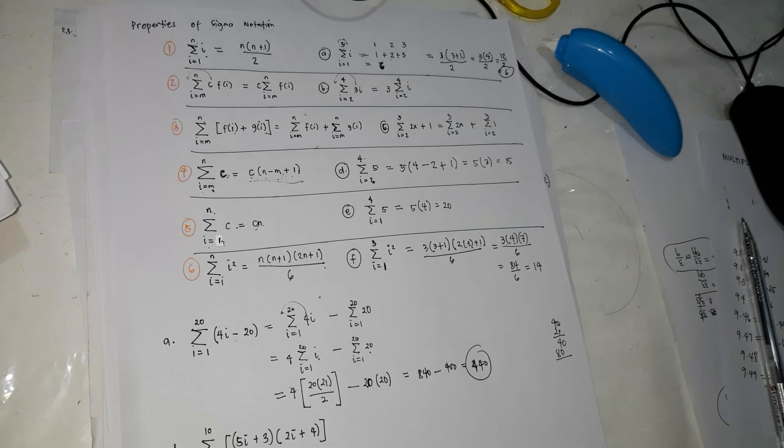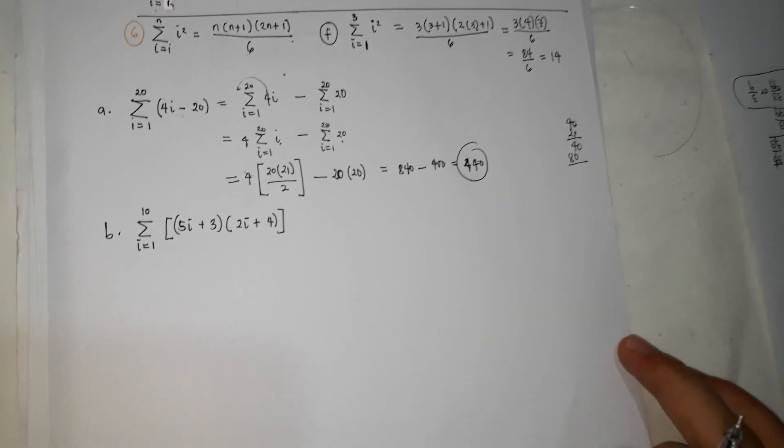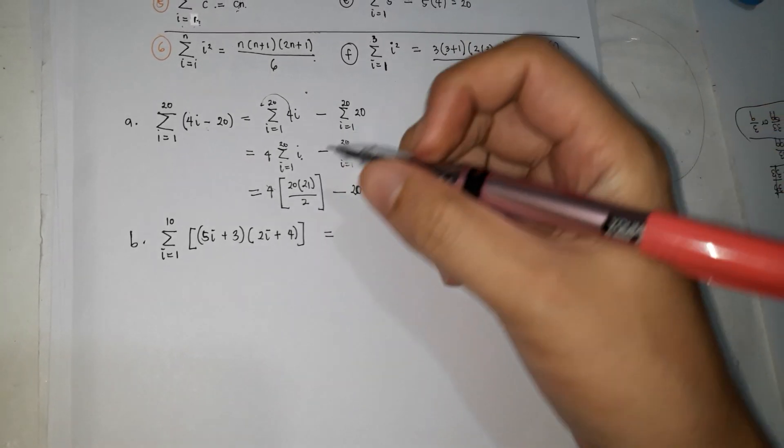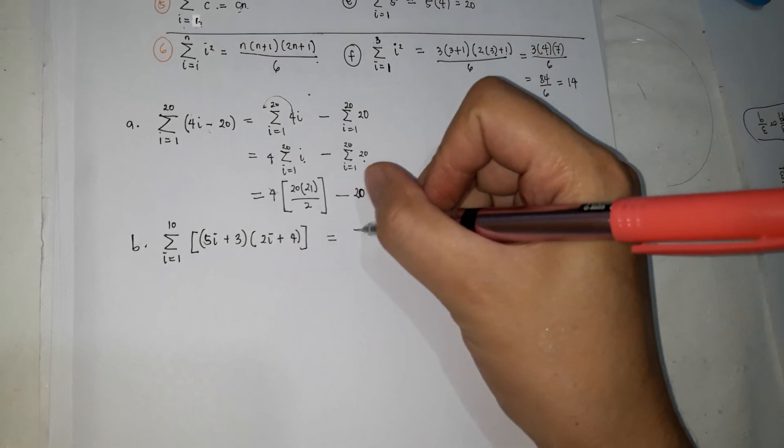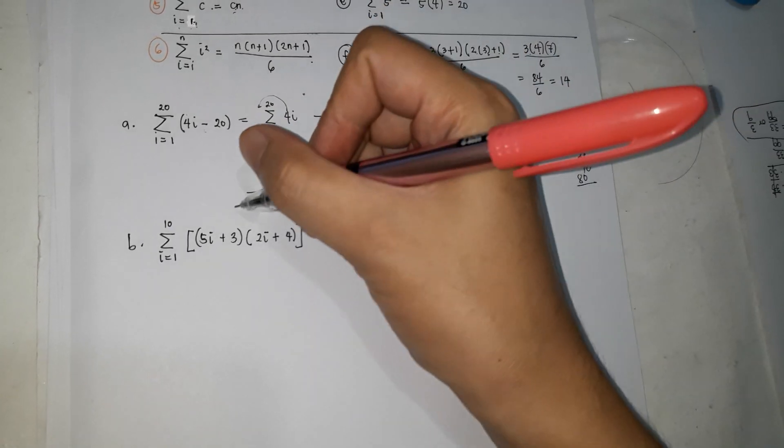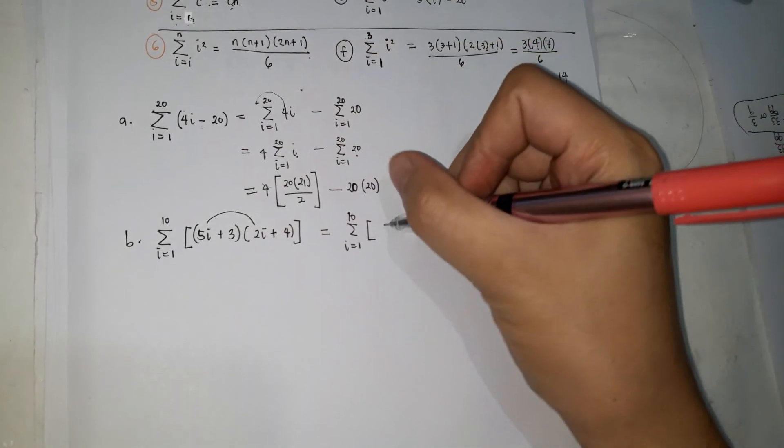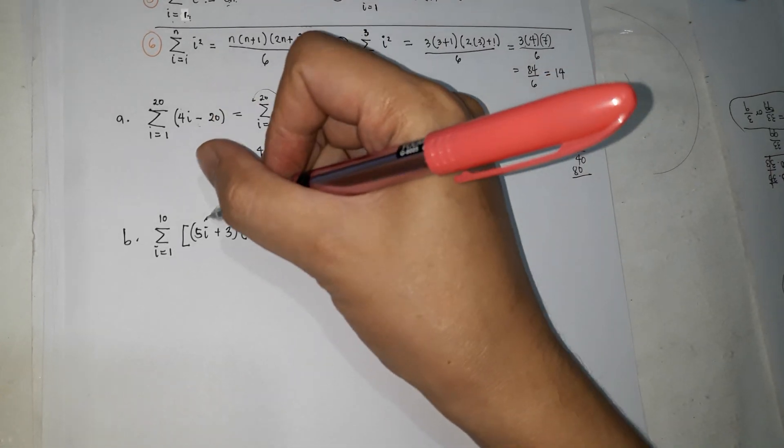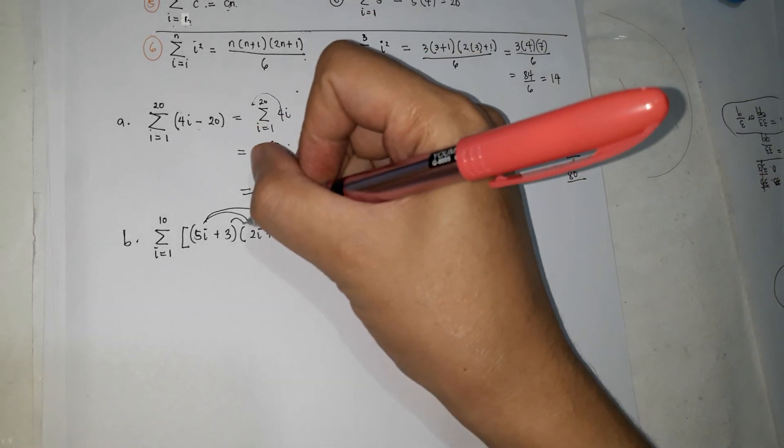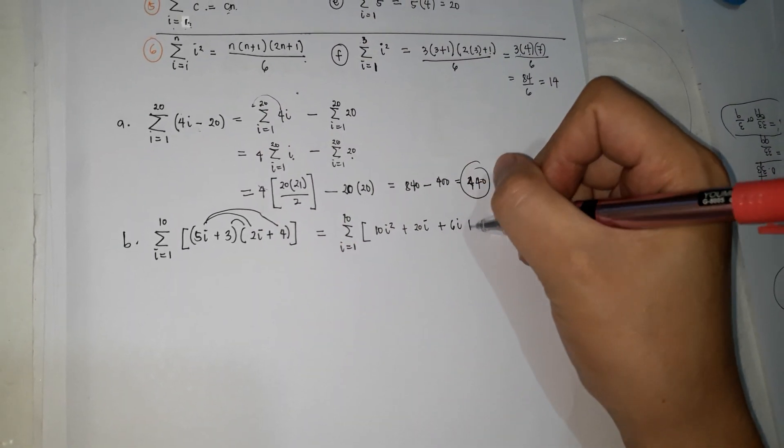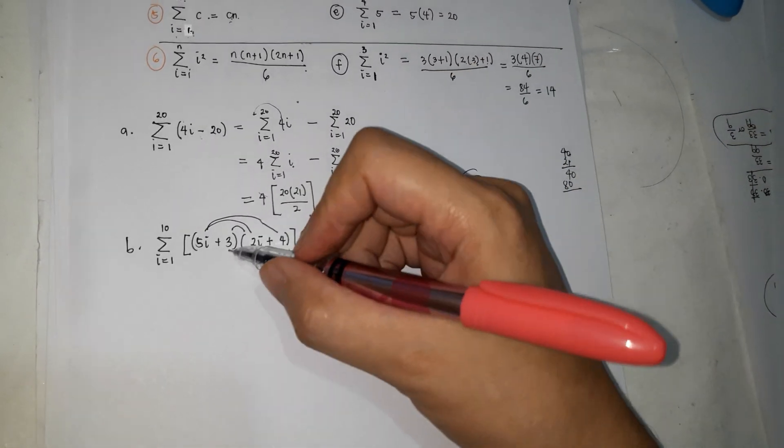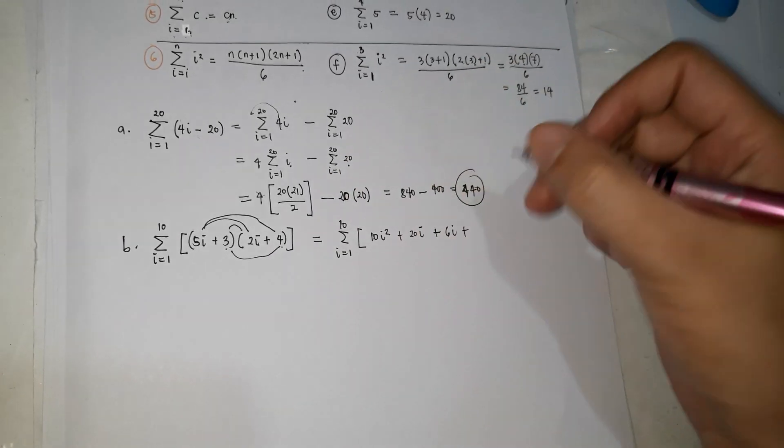Next, this is a lot more complicated. So kapag ganito ang given. Ang unang gagawin is, you multiply this one so that it would be easier. So i, i is equal, from 1 to 10. So foil. So yan muna, 10i squared. Plus 20i, plus 6i, plus 3 times 2i is 6i, tapos 5i times 4 is 20i, plus 3 times 4 is plus 12.